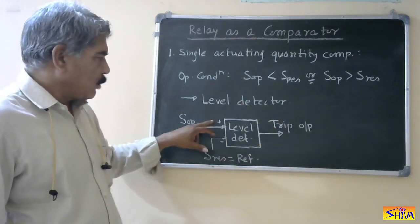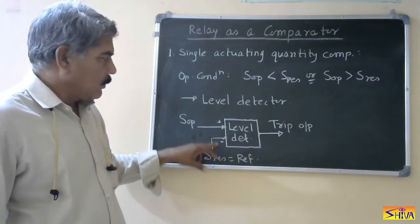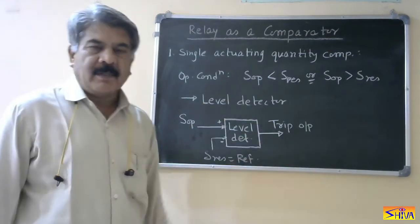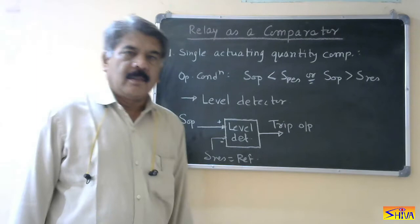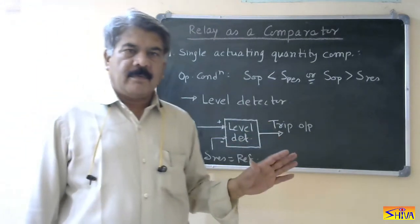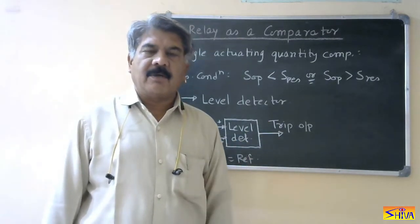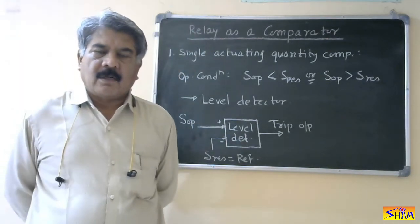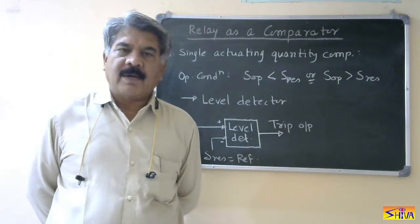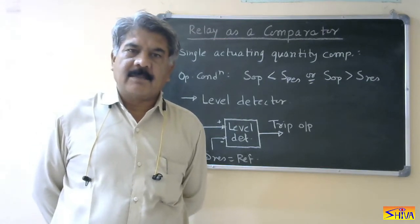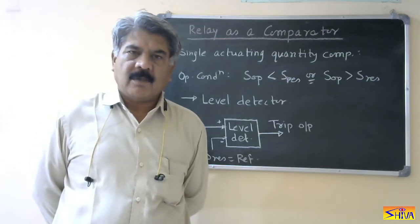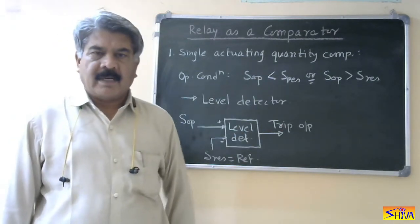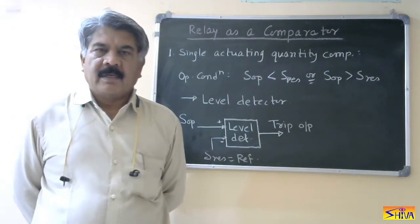For the undervoltage condition, when the operating quantity becomes less than the restoring quantity, we get the trip output. The advantage of this single actuating quantity comparator is that it is simple and cheap. The drawback is it does not provide the directional sense — that is the biggest drawback of this single actuating quantity comparator. It does not provide the directional feature.